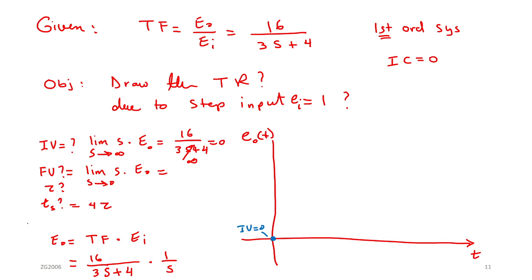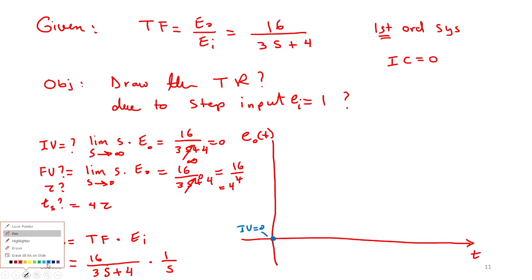For the final value, we use the final value theorem: the limit as S goes to zero of S times E_out. This gives 16 / (3S + 4) as S → 0, which equals 16 / 4 = 4. So the final value is 4 — the function will end up here at the value 4.